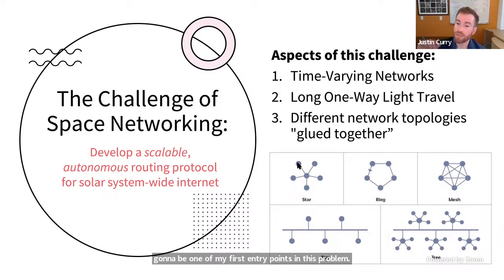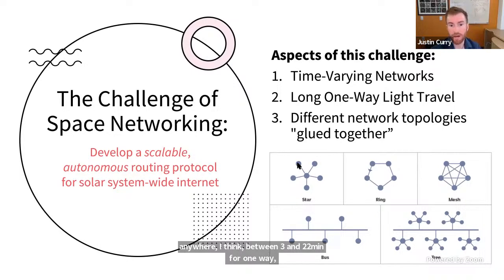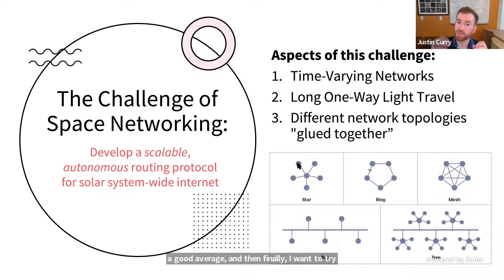Second aspect is how do you communicate when each relay of information has to travel at the speed of light, but here the speed of light accumulates to serious time across the network. Just for context, I mean, communicating to the moon, it's not so bad. It's about a 1.5 second one-way trip, but depending on where Mars and the Earth are in their relative orbits, we're looking at anywhere, I think, between 3 and 22 minutes for one-way light travel between Earth and Mars, with like maybe 10 minutes or eight minutes as a good average. And then finally, I want to try to understand in the context of time-varying networks where there's this non-trivial propagation delay, what does it mean for the internet to be a network of networks in this setting? So how can we glue together different network topologies?